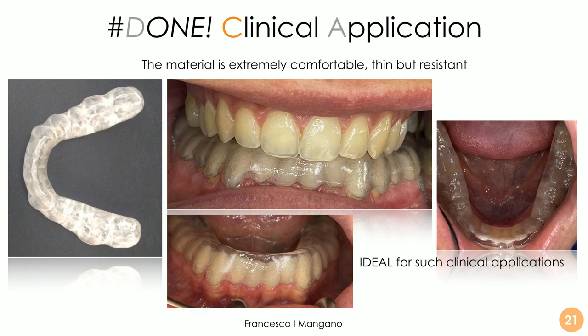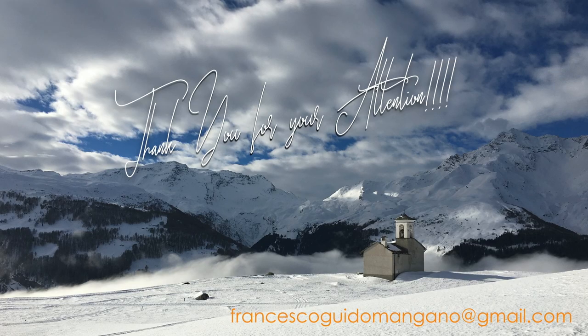The ability to print the bite splint directly allows us to skip steps that were previously unavoidable, like creating the bite conventionally on a model. The process is very reliable, accurate, and long-lasting — we have patients wearing these splints for four months with no mechanical issues. Clinically the results are very nice: patients with temporomandibular disorders can be treated with this pre-treatment device, which reduces joint pain, reduces discomfort in the masticatory muscles, and helps avoid tooth substance destruction.